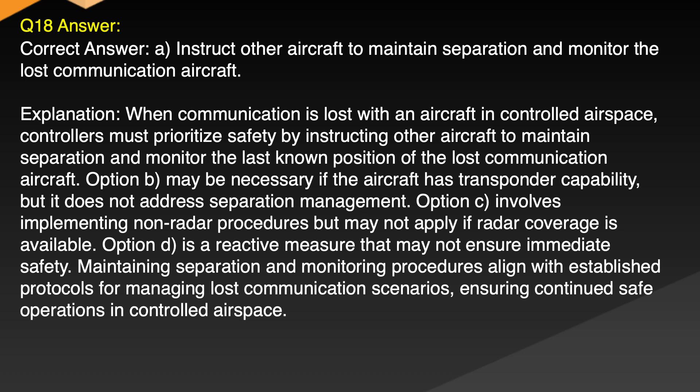Explanation: When communication is lost with an aircraft in controlled airspace, controllers must prioritize safety by instructing other aircraft to maintain separation and monitor the last known position of the lost communication aircraft. Option B may be necessary if the aircraft has transponder capability but it does not address separation management. Option C involves implementing non-radar procedures but may not apply if radar coverage is available. Option D is a reactive measure that may not ensure immediate safety. Maintaining separation and monitoring procedures align with established protocols for managing lost communication scenarios, ensuring continued safe operations in controlled airspace.